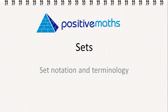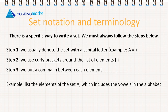In this video for Positive Maths we're going to learn about set notation and terminology. There is a specific way to write a set and we must always follow the steps below. Number one, we usually denote the set with a capital letter, for example A. Step two, we use curly brackets around the list of elements, and step three, we put a comma between each element.